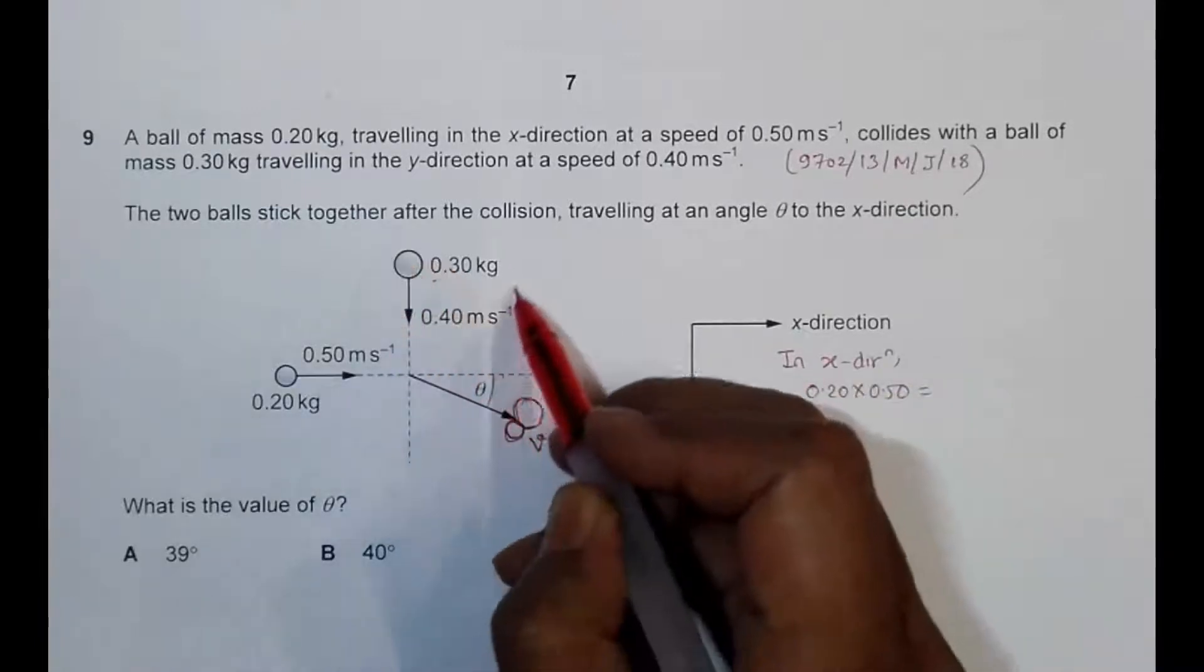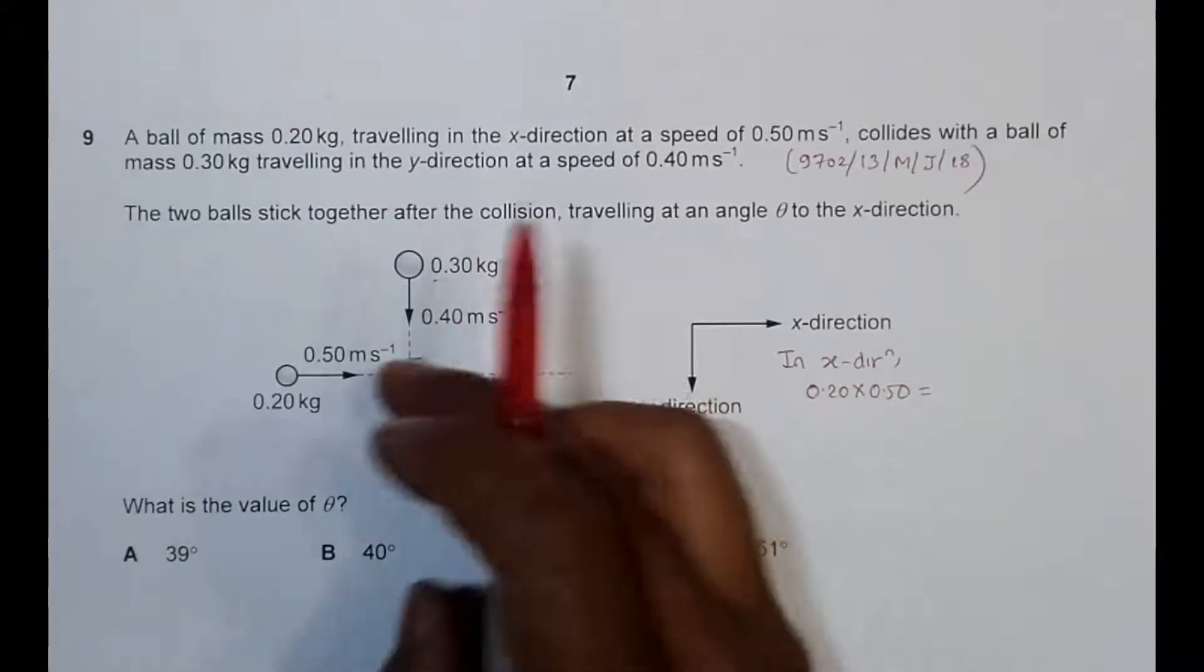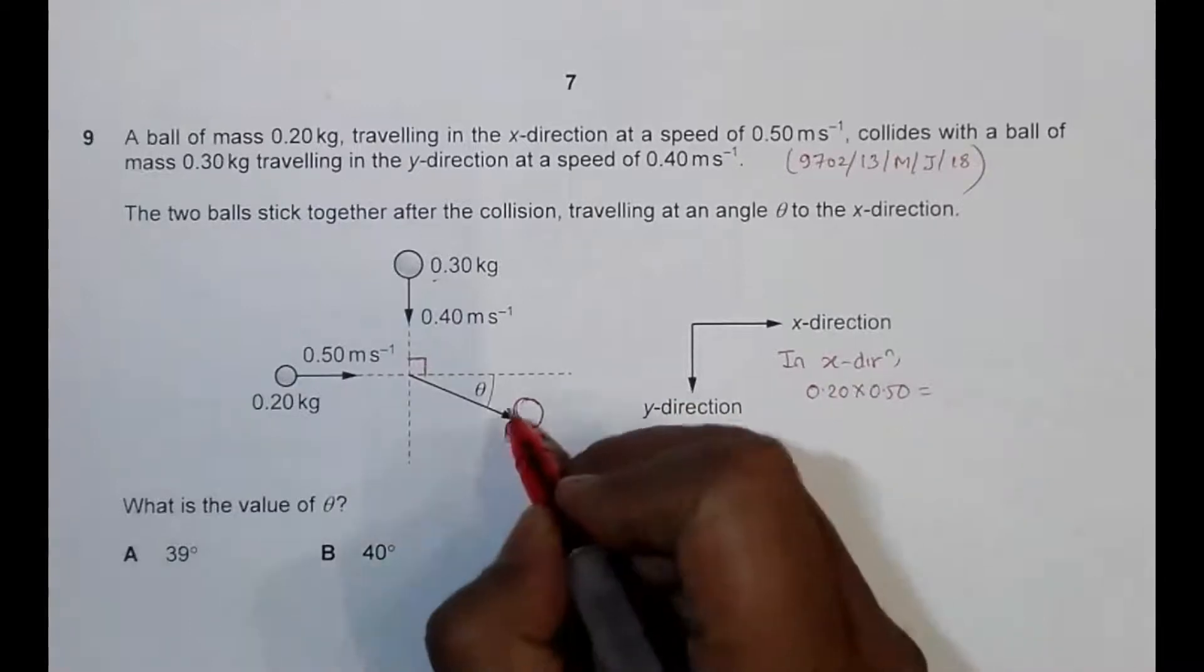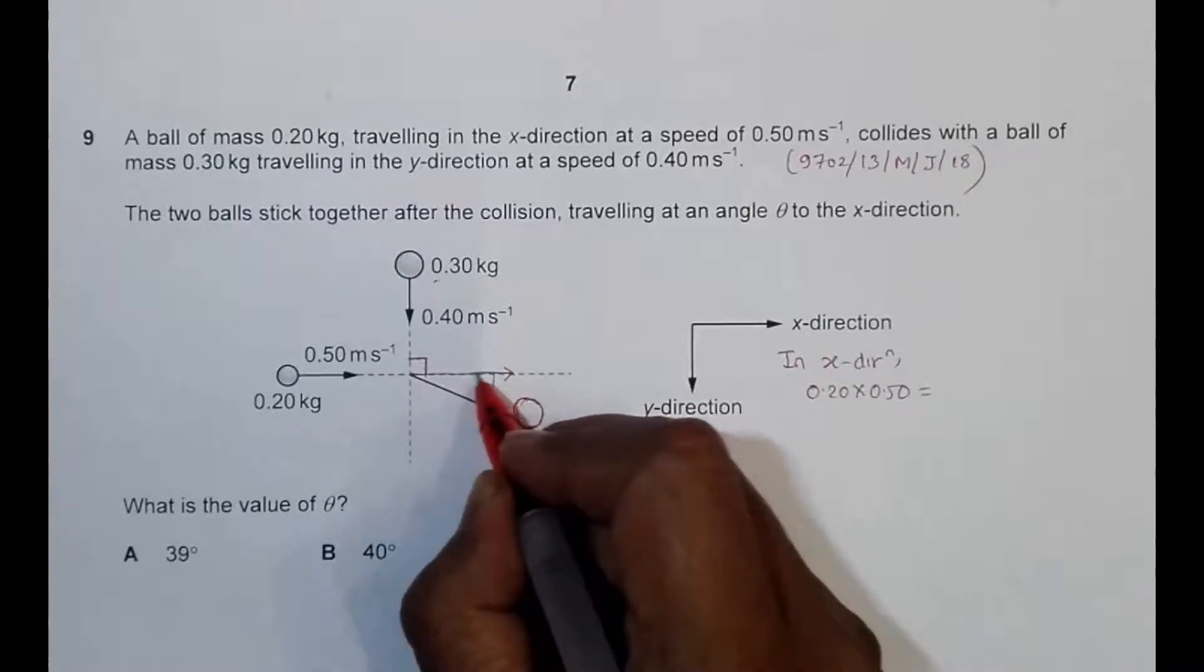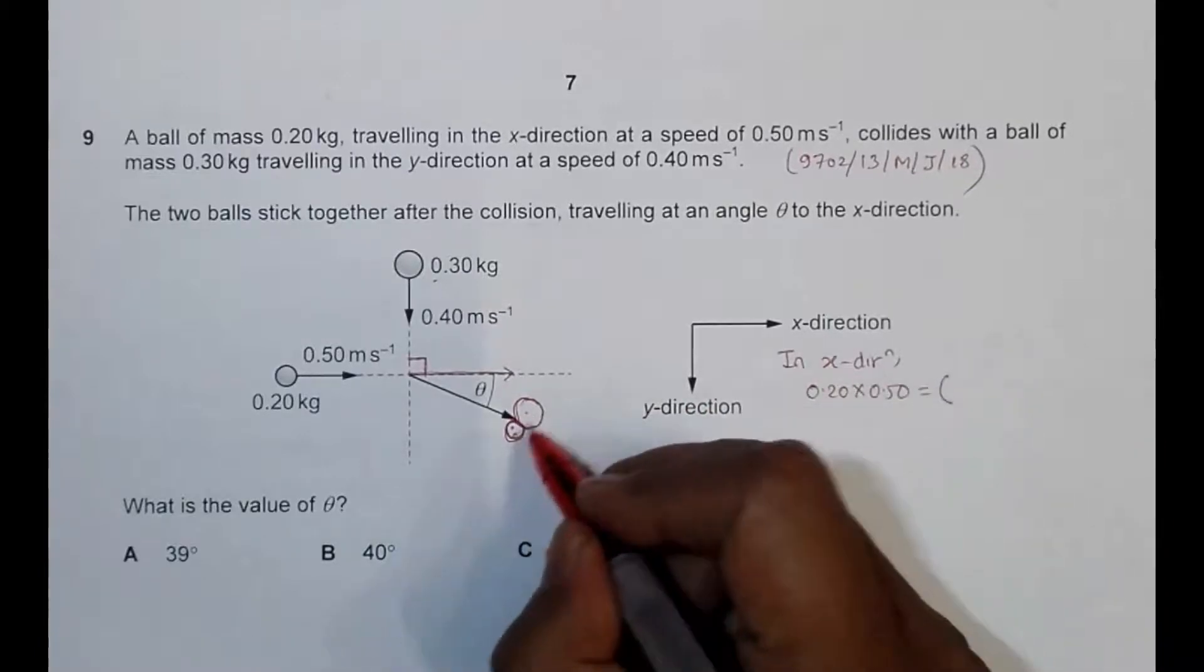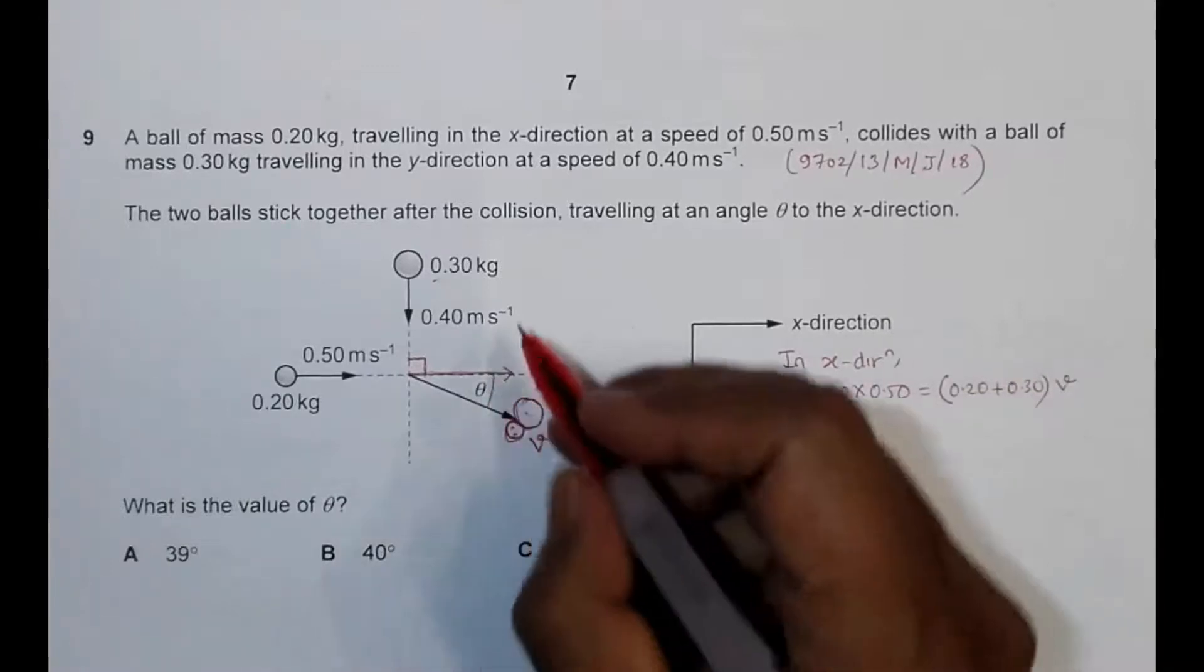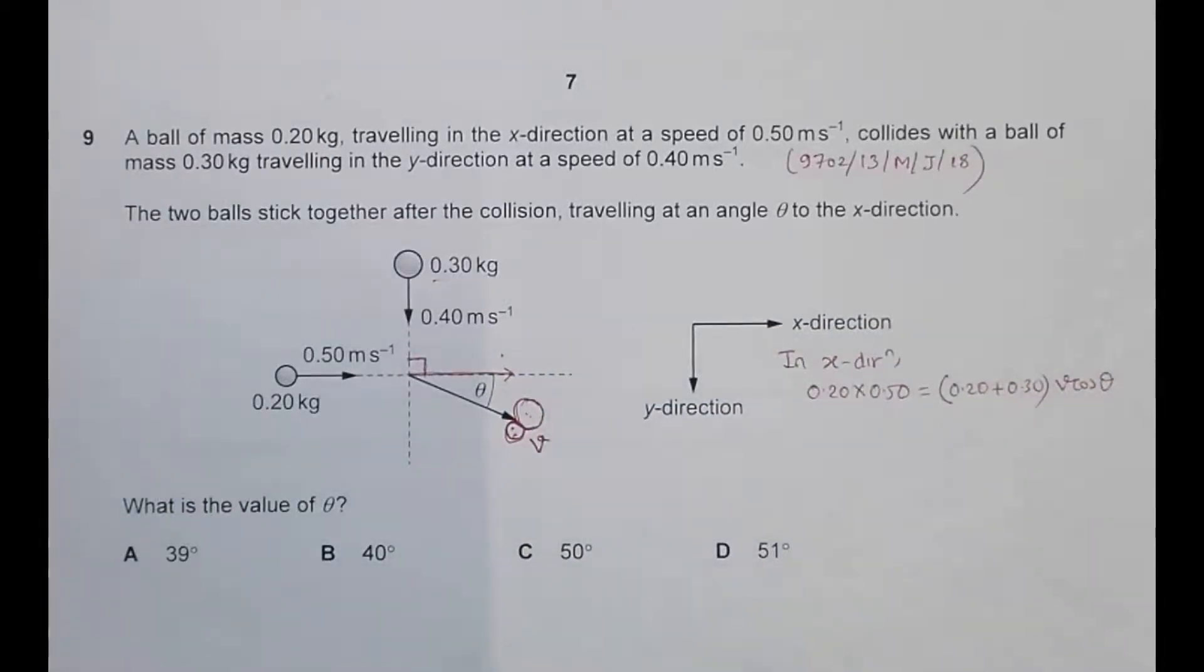This thing does not have any momentum in the x direction because it is perpendicular. So at a perpendicular direction, momentum cannot have any component or effect. So the horizontal component equals the combination of both masses: 0.20 plus 0.30, then v, and since it is theta here, it should be v cos theta. So in x direction, the equation is like this.